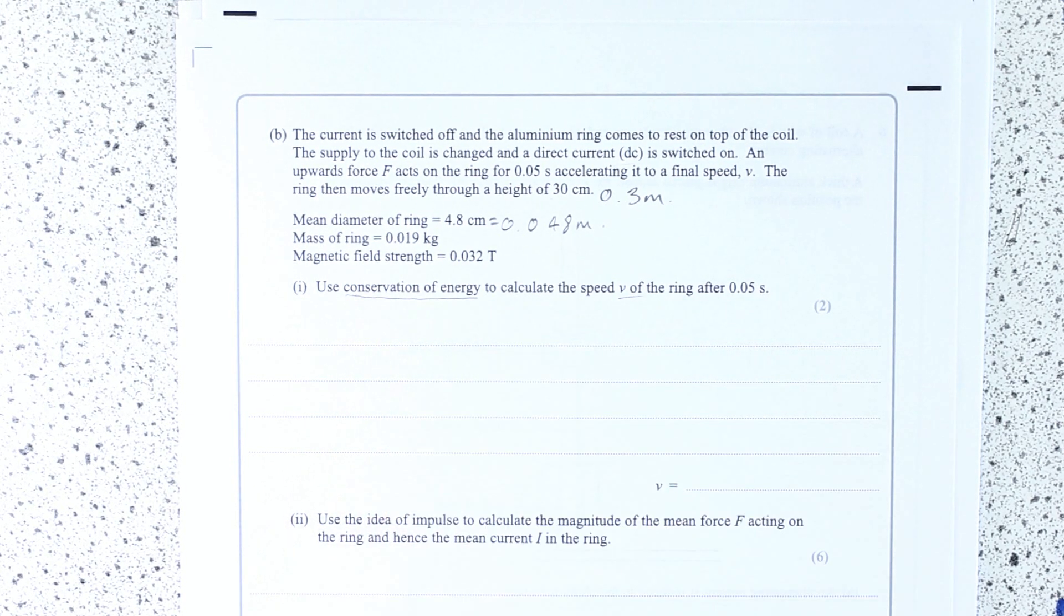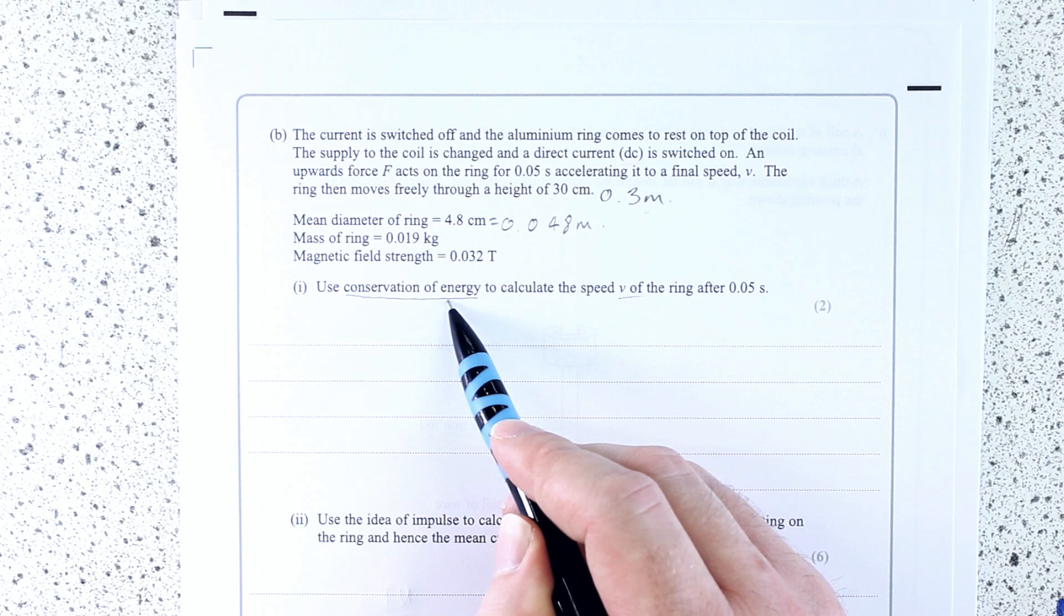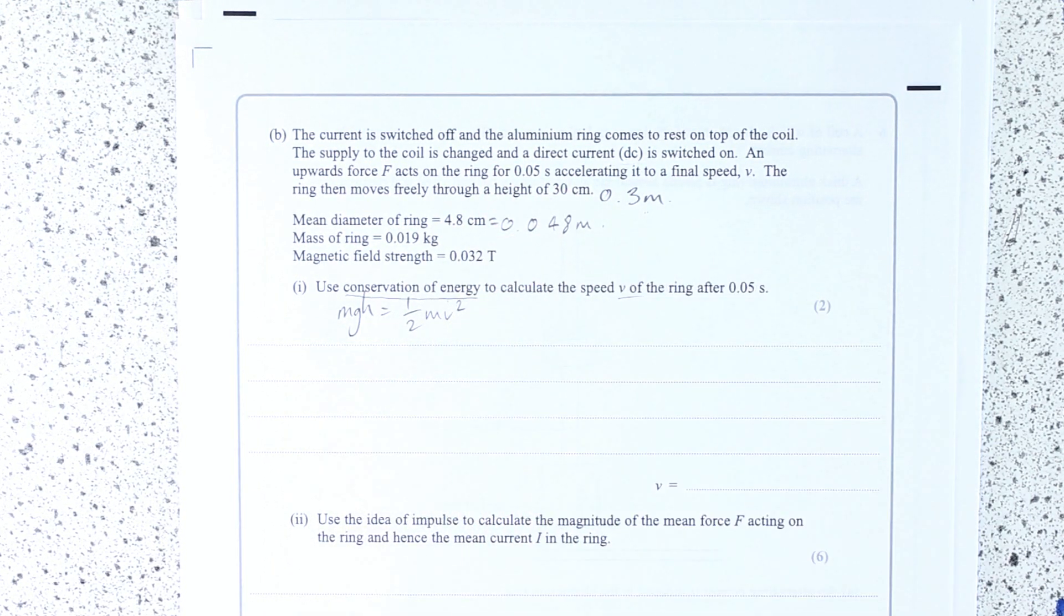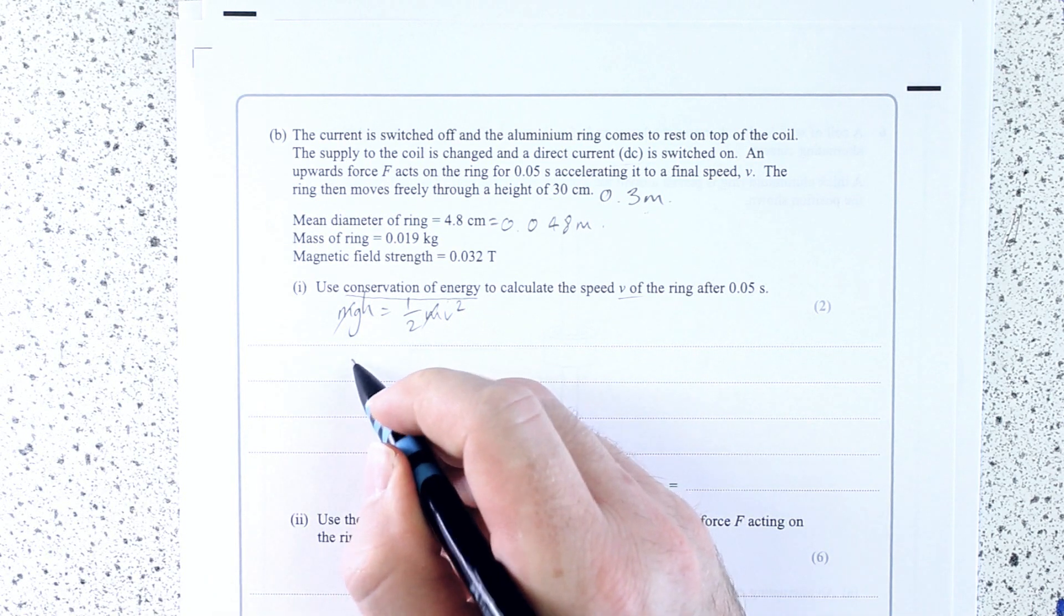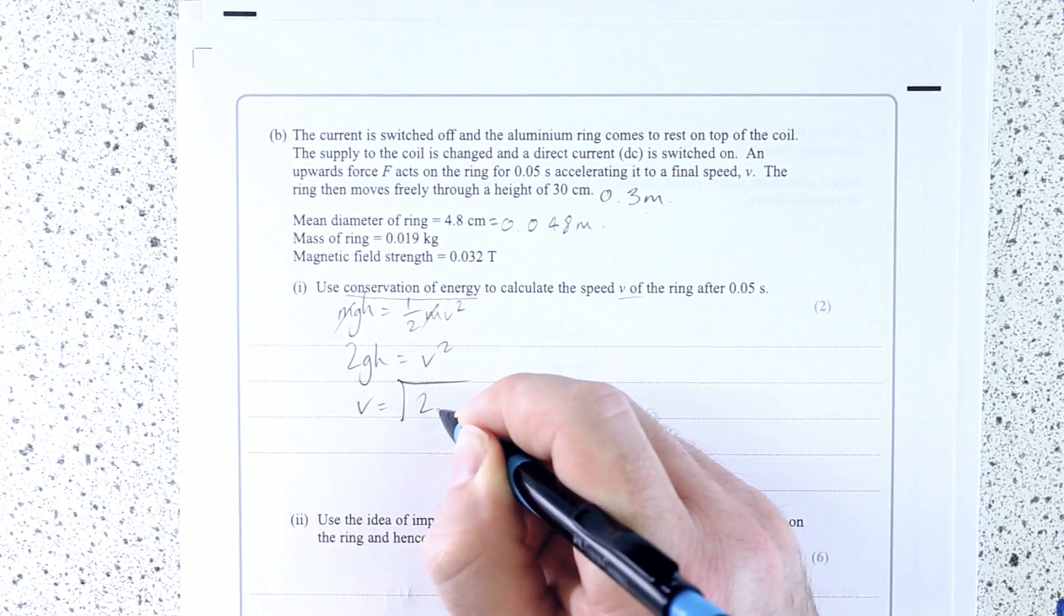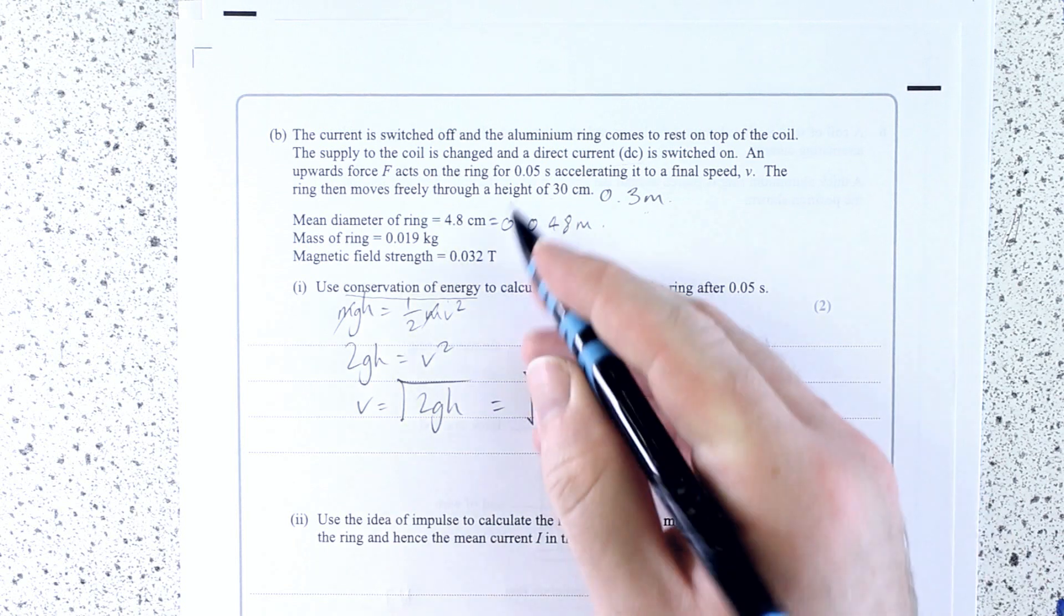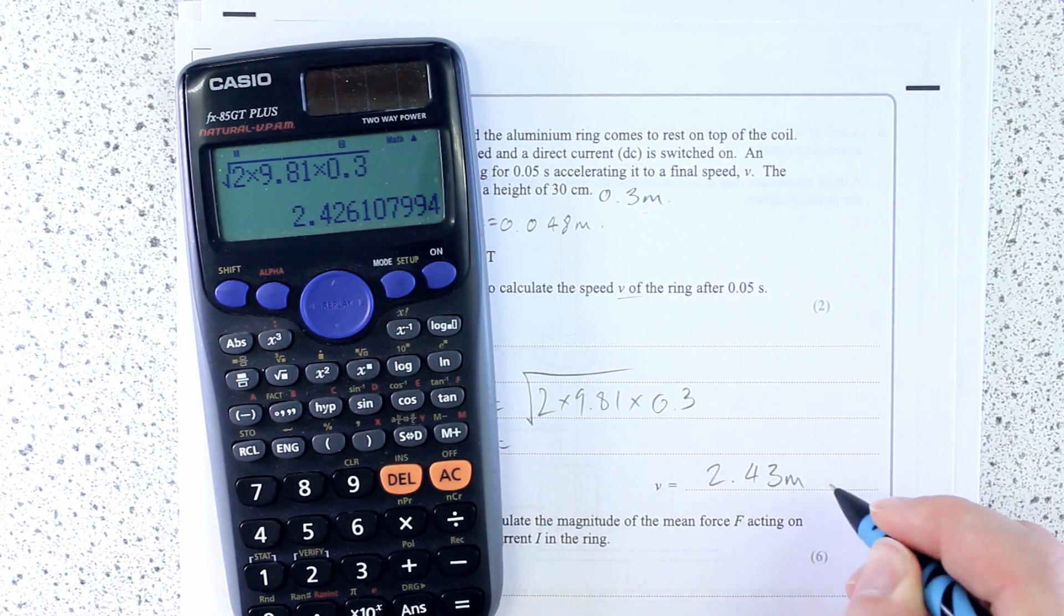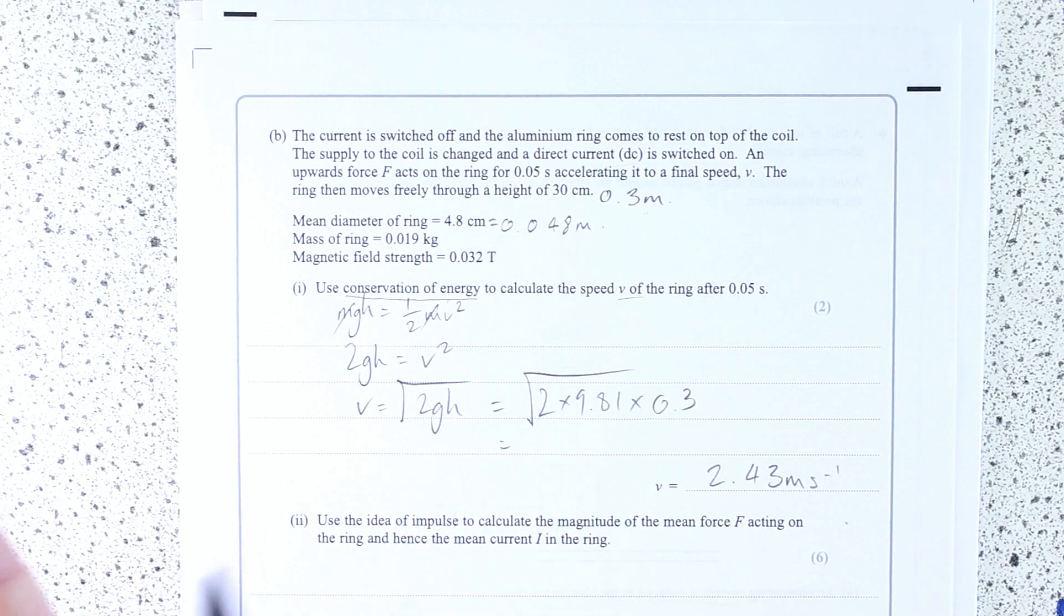Use conservation of energy to calculate the speed V of the ring after 0.05 seconds. Conservation of energy. We are given a height that it reaches here. Conservation of energy means kinetic into potential or potential into kinetic. In this case, our potential is a gravitational potential. M don't have, but they cancel. So GH equals half MV squared. We want to work out V. So 2gh is V squared. So V is root 2gh. That's easy peasy. Root 2 times 9.81 times 0.3. 2.43 meters per second. Here's where actually all this bumf, conservation of energy, just think about that law that you know. It's a much simpler question.